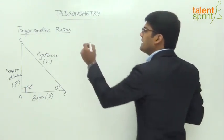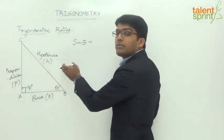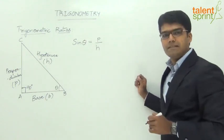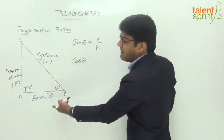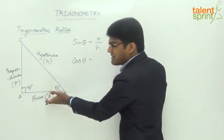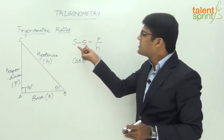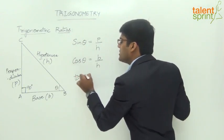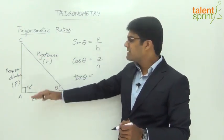The first trigonometric ratio is sine theta. Sine theta is the ratio of the opposite side to the hypotenuse, so sine theta equals p by h. Next is cosine theta, or cos theta — this is the ratio of the adjacent side to the hypotenuse, so cos theta equals b by h. In trigonometry it's all about the relationship between the angle theta and the different sides of the triangle. Next is tan theta, or tangent of theta — tan theta is the ratio of the opposite side to the adjacent side, so tan theta equals p by b.